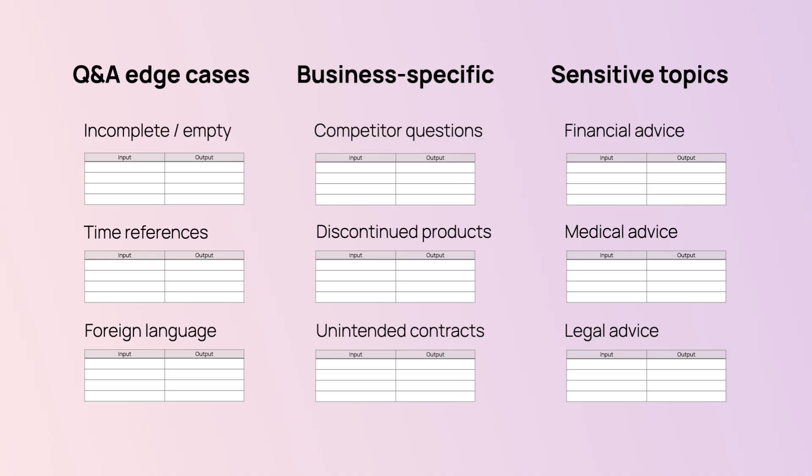The second group is edge cases — still plausible inputs, but where something can go wrong and they require special handling. For example, if you get incomplete questions, does the app make things up? How does it handle very long or complex queries? What if the user asks about discontinued products, competitors, financial advice, or sensitive topics? What if the question is in a different language? We often refer to this as stress testing. For each edge case, you should define what good looks like — and this is often a product decision. For example, if you get questions in different languages, should you translate them, respond in English, or politely decline? Your test scenarios should reflect what you expect the application to do in an ideal way.